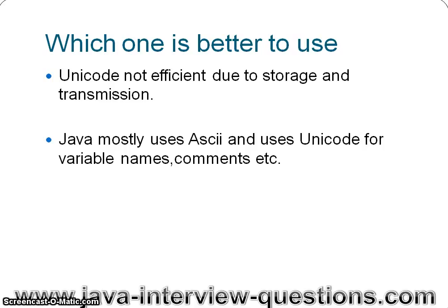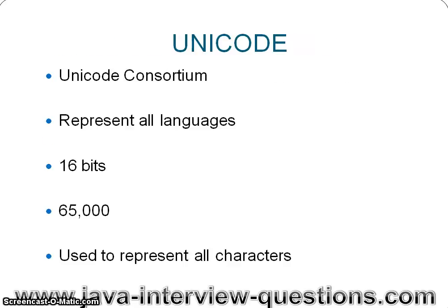Which one does Java use? Java mostly uses ASCII and uses Unicode only for defining variable names, comments, etc. By this way it also supports internationalization. Java mostly uses ASCII for variable names, comments, and strings, but uses Unicode where applicable.